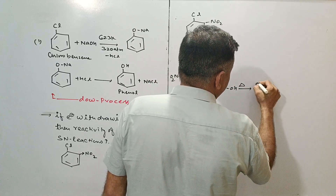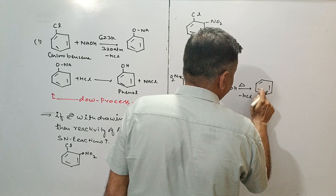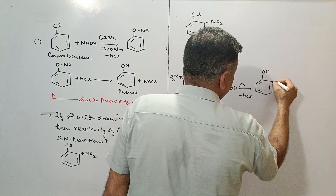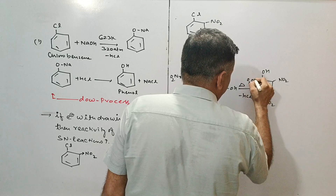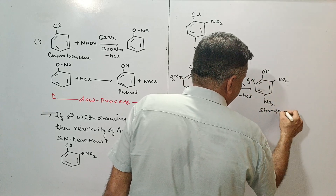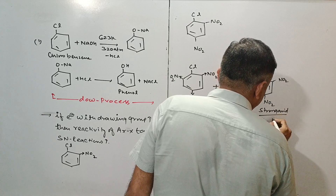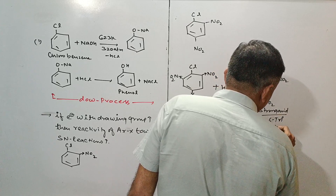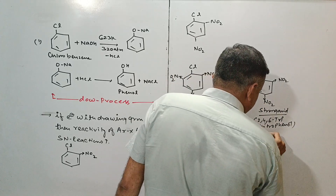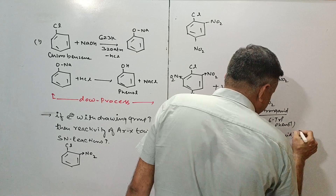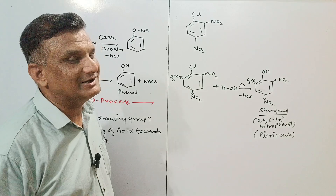Maximum electron withdrawing groups attach hone ke karan, isko aap sirf slight water ke saath boil kar denge, to bhi nucleophilic substitution reaction easy way mein ho jaegi by the removal of HCl, aur yahan ek important compound ka formation hoga - jo ki phenol hai. But three electron withdrawing groups ke karan, yeh ek strong acid ke roop mein kaam karta hai. Yeh hai 2,4,6-trinitrophenol - trinitrophenol. Three electron withdrawing groups ke karan yeh strong acid ki tarah kaam karta hai, isliye particular isko picric acid bhi kehte hain. This is a most important question for CBSE - picric acid kyon kehte hain? To jawab: three electron withdrawing groups ke karan, particular yeh strong acid ki tarah ek roop karta hai.